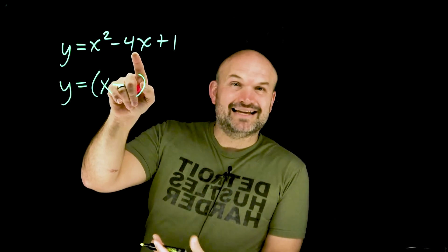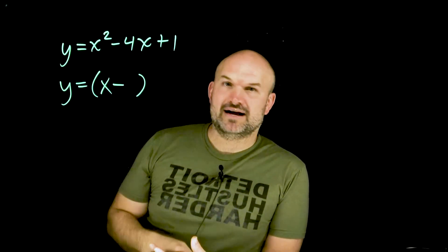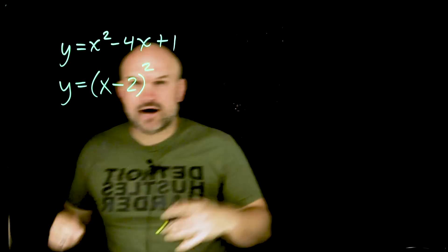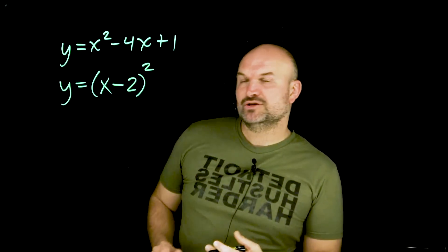Then, we're just gonna take the value of b and divide it by two. So, four divided by two is just going to be a two. Now, we have identified what our binomial squared is going to be.